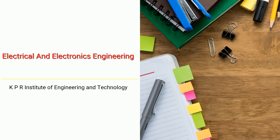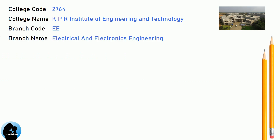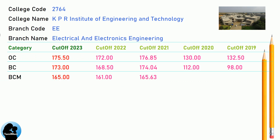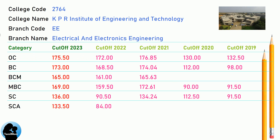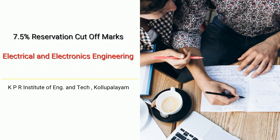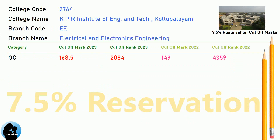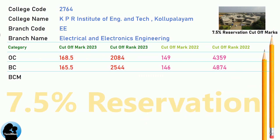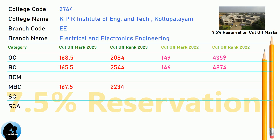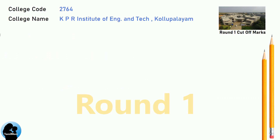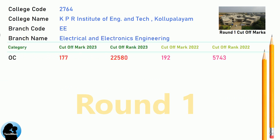BNEA Round 2 Cut-off for KPR Institute of Engineering and Technology in Electrical and Electronics Engineering. BNEA Round 3 Cut-off for KPR Institute of Engineering and Technology in Electrical and Electronics Engineering.